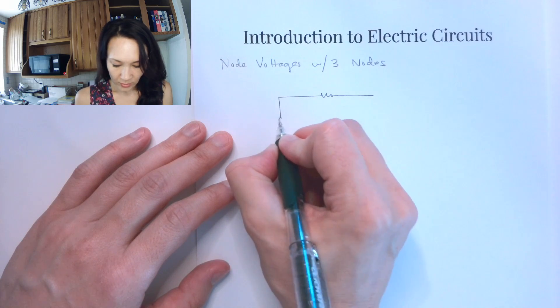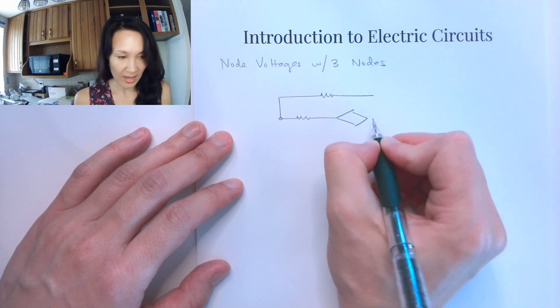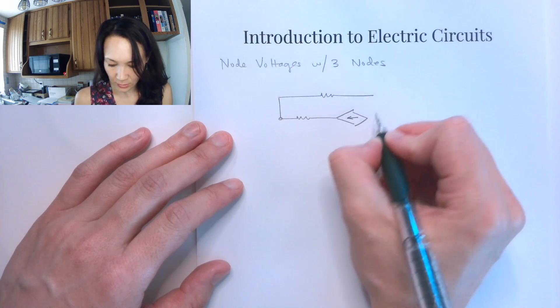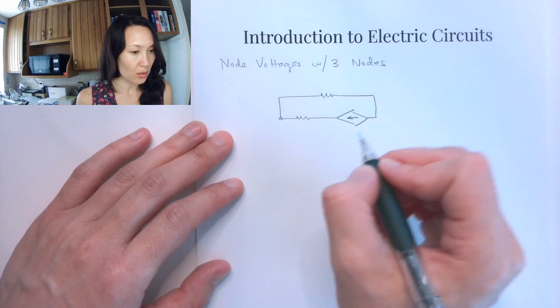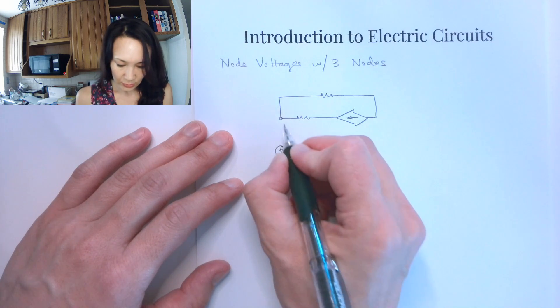Now with three nodes, the arithmetic can get a little bit hairy if you are using substitution. So I'm actually going to show you how you can use some linear algebra to solve these. So let's do an example.